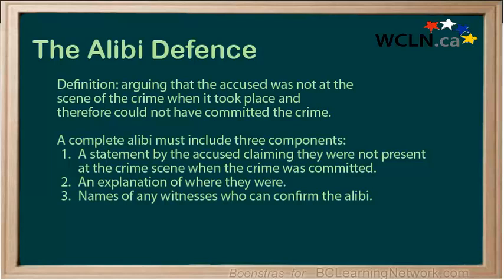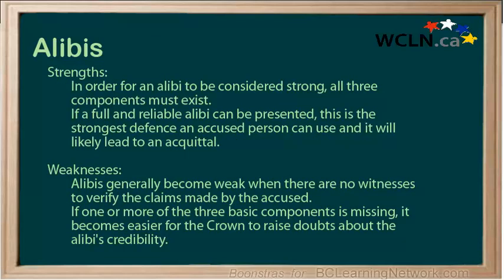The definition of the alibi defense is to argue that the accused was not at the scene of the crime when it took place and therefore could not have committed the crime. A complete alibi must include three components: a statement by the accused claiming they were not present at the crime scene; an explanation of where they were; and names of any witnesses who can confirm the alibi.